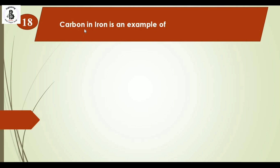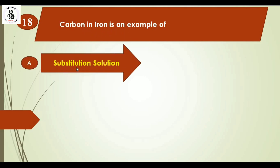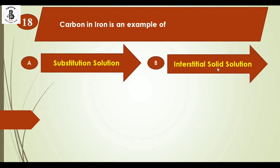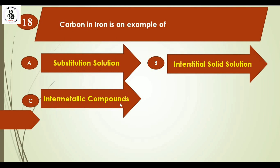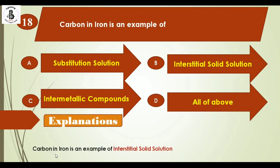Carbon in iron is an example of: option A substitutional solid solution, option B interstitial solid solution, option C intermetallic compounds, and option D all of the above. Carbon in iron is an example of interstitial solid solution, because in an interstitial solid solution both solvent and solute atoms are of different sizes, and carbon atoms are smaller than iron atoms. The right answer is option B.